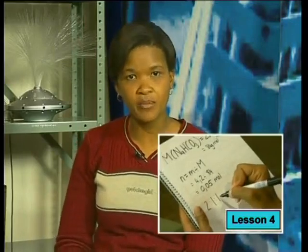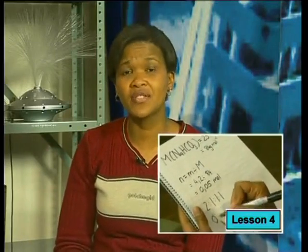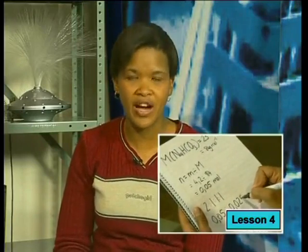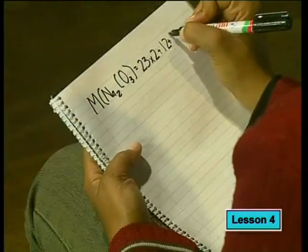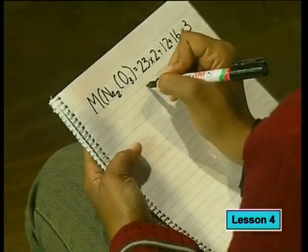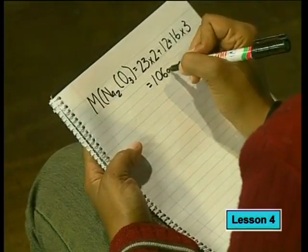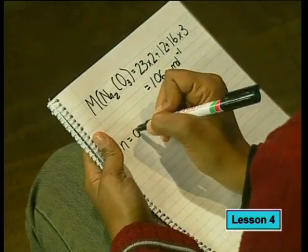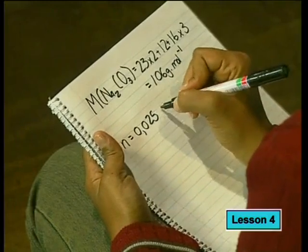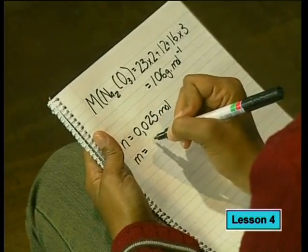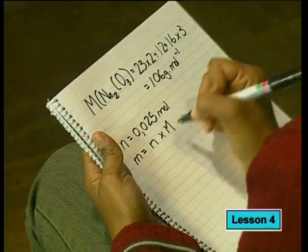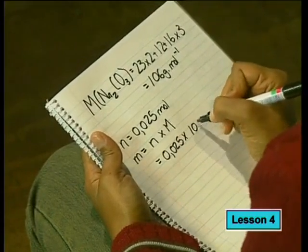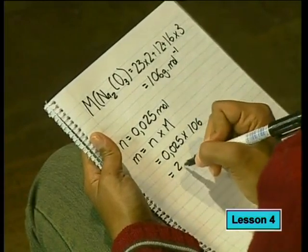So now I can use the ratio of moles from the balanced equation — 2 is to 1 — to predict that if I have 0.05 moles to start, then in the product I will form half this number of moles: 0.025 moles. Finally, I calculated the theoretical mass of sodium carbonate formed in this reaction. The molar mass of sodium carbonate works out to 106 grams per mole. We already know that the number of moles is 0.025 moles. Using the equation m = n × M and substituting in the values, I have found that 2.65 grams of sodium carbonate should be formed.